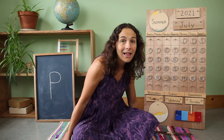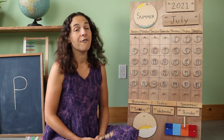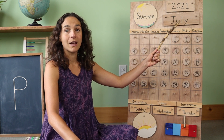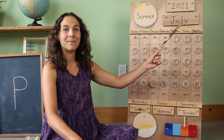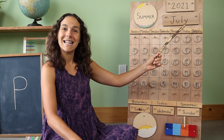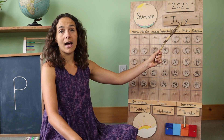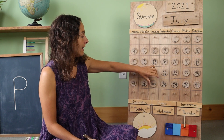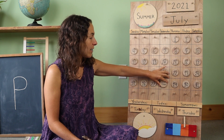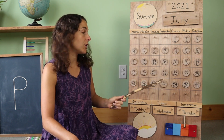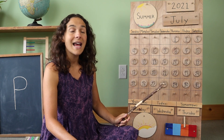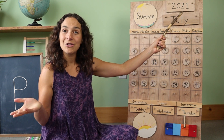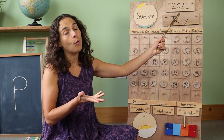Behind me I have the calendar and weather chart. First, let's go over the date. The month is right up here. Do you know what the month is? July. That's right, friends. The month is July. Today is July 28th. Let's move the chip over from yesterday. Yesterday was July 27th, and today is July 28th. And the year is 2021.